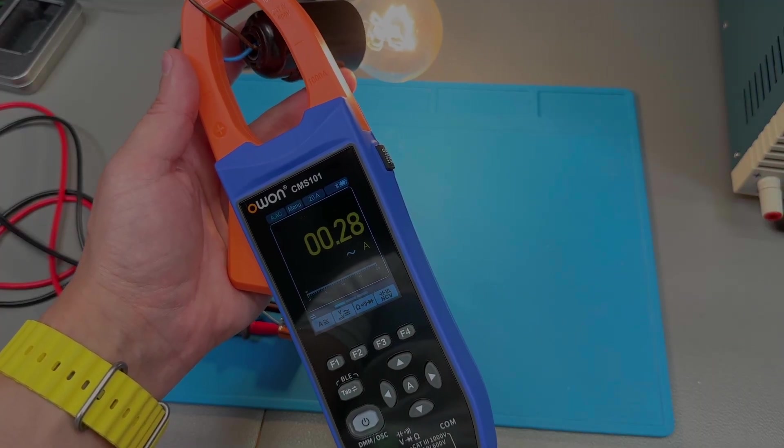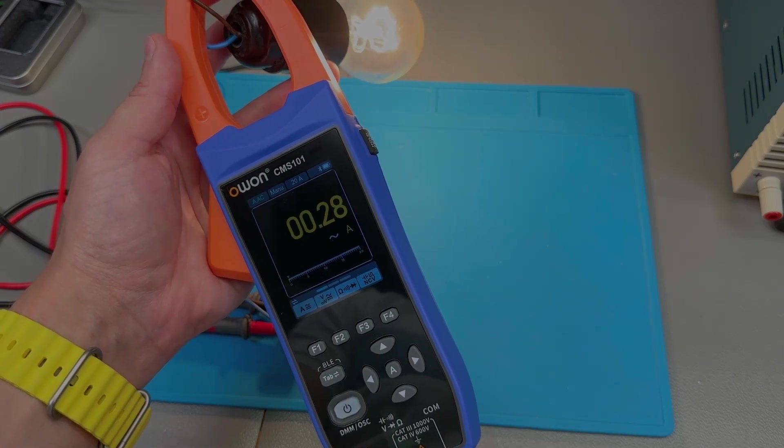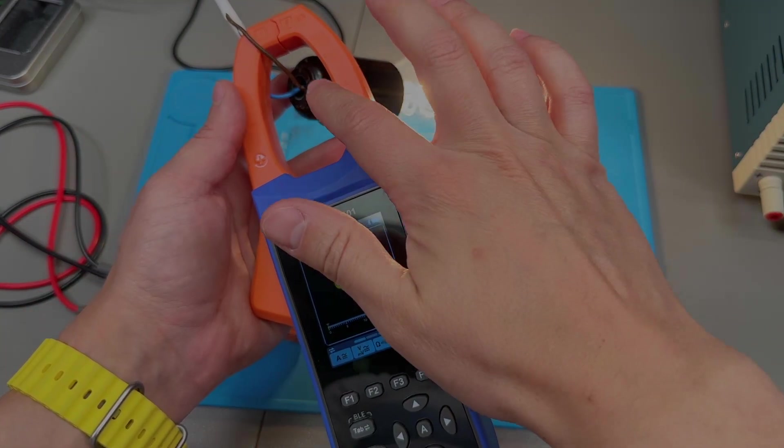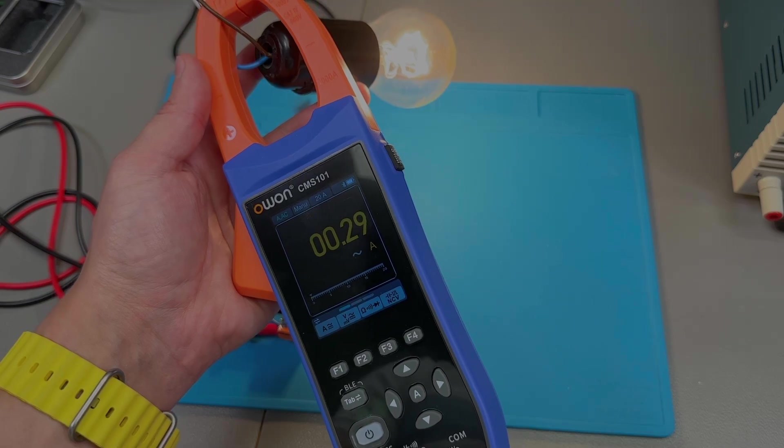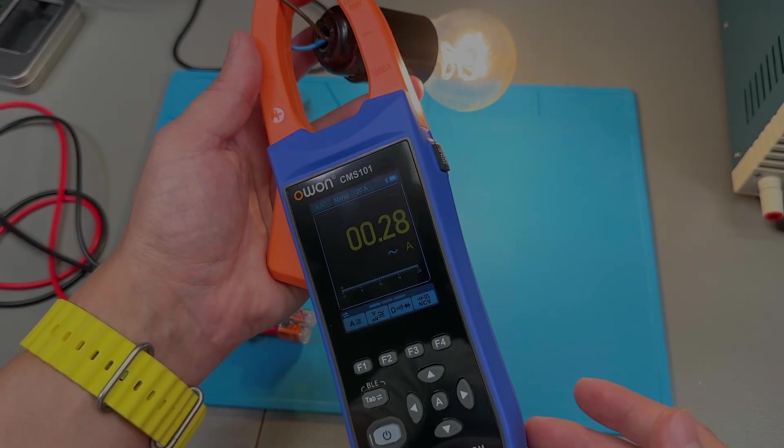The clamp meter seems to be measuring correctly. I'm measuring a light bulb, so purely a resistive load here. Remember that the wire theoretically should be going straight through the middle of your clamp for the maximum precision, but it still does very good even with the wire on the side of the clamp.